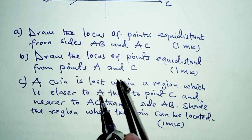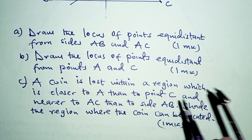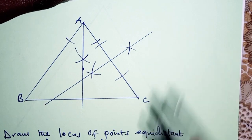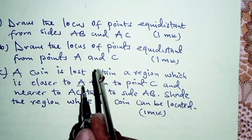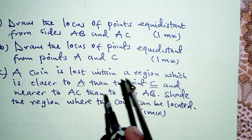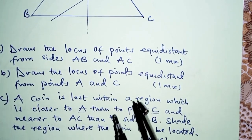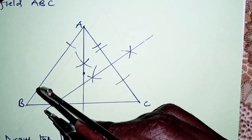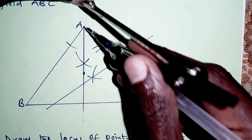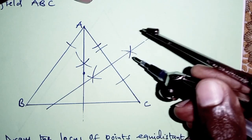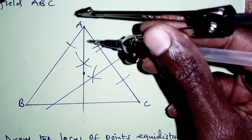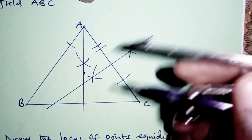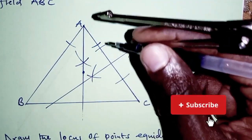A coin is lost within a region which is closer to A than to C. We have A and C forming a line segment, so we consider the perpendicular bisector locus for line segment AC. The region closer to A is the side towards A of this perpendicular bisector locus. Therefore we will be considering shading the side closer to A than to C.